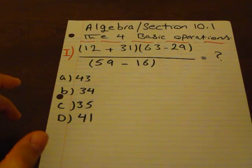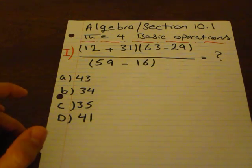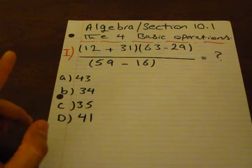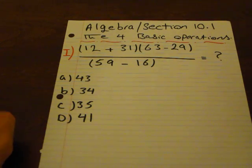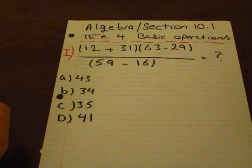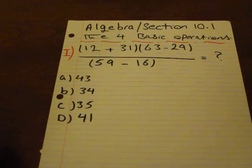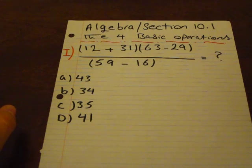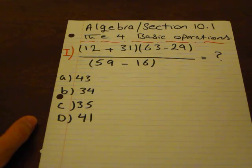The first question we are going to cover today is 12 plus 31 times 63 minus 29 over 59 minus 16. The main concept of this question is we need to evaluate the expression inside the parentheses first, and then do the division and multiplication.